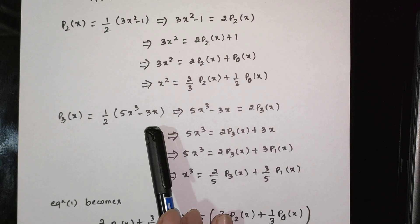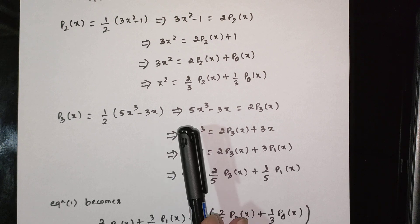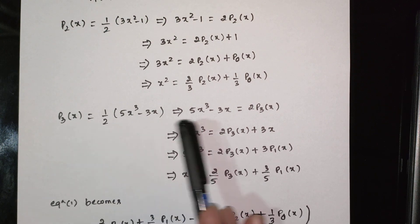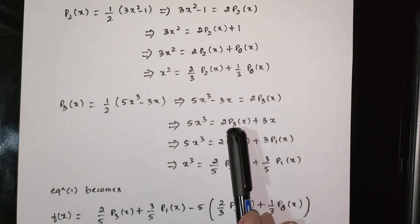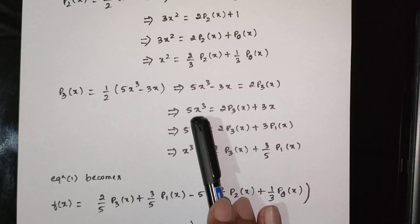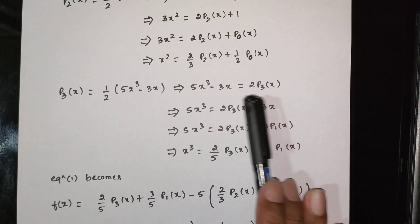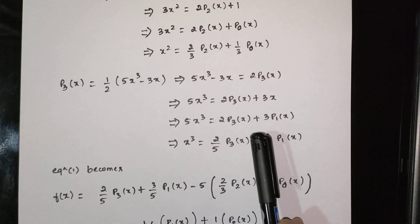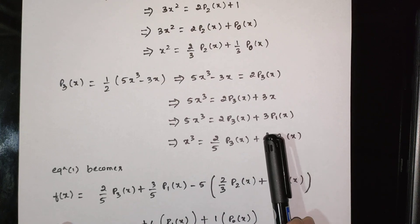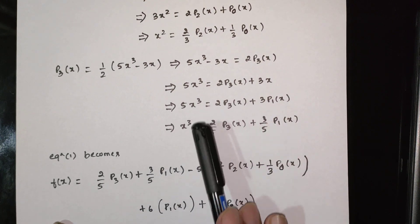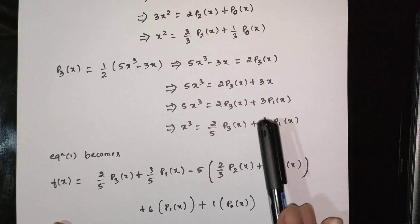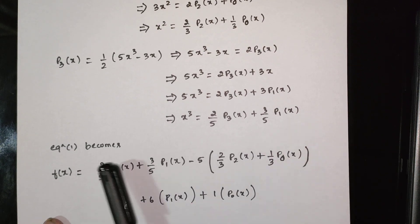P3 of x equals (1/2)(5x cubed minus 3x), which implies 5x cubed minus 3x equals 2 P3 of x. So 5x cubed equals 2 P3 of x plus 3x, and since x equals P1 of x, we get 5x cubed equals 2 P3 of x plus 3 P1 of x. Therefore x cubed equals (2/5) P3 of x plus (3/5) P1 of x.